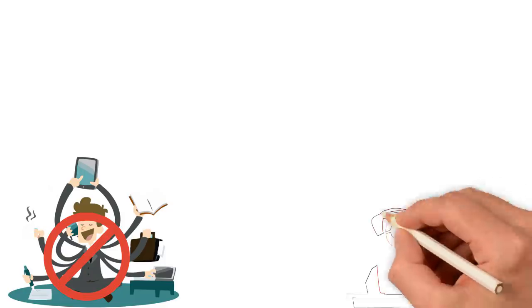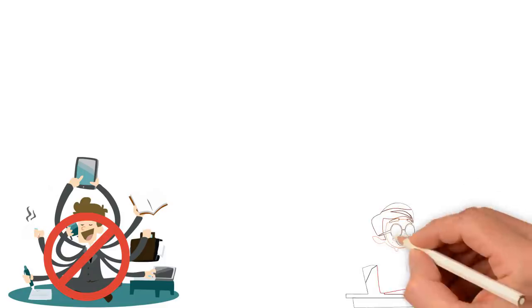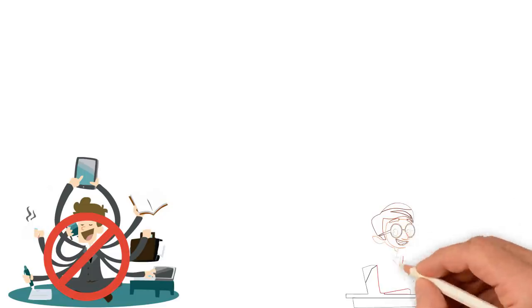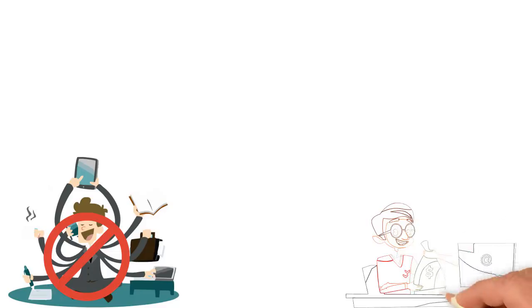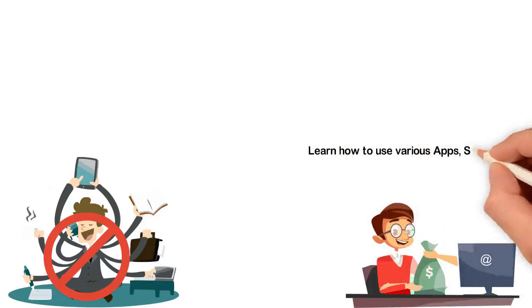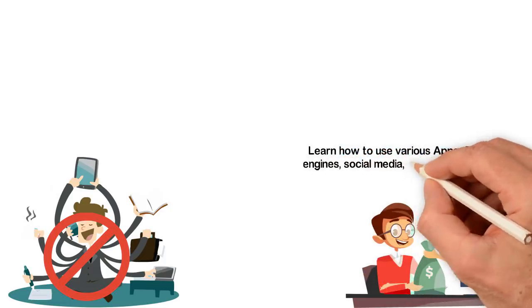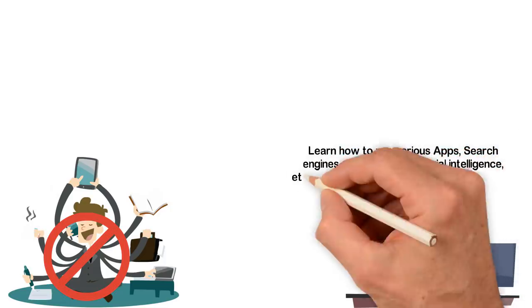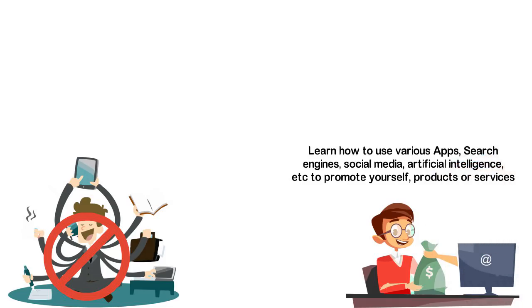To do this, you have to create something. Solve some problems and employ other people to work in the system you've created. If you think employing others is a crime against your conscience, then employ the technologies. Learn how to use various apps, search engines, social media, artificial intelligence, and others to promote yourself, products, or services.